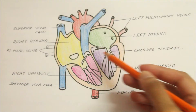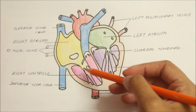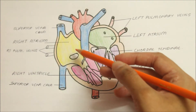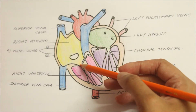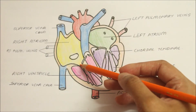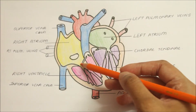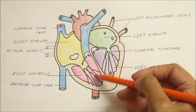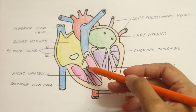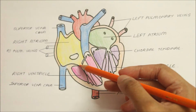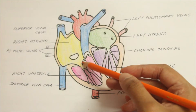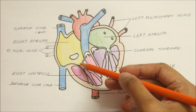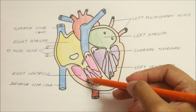Now let's look at the right atrioventricular orifice. Blood passes out from the right atrium through the right atrioventricular or tricuspid orifice and goes to the right ventricle. The tricuspid orifice is guarded by the tricuspid valve, which maintains unidirectional flow of blood.